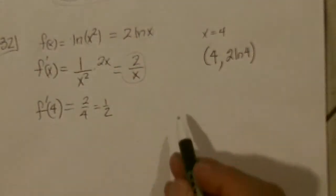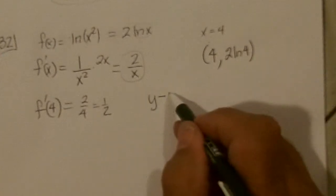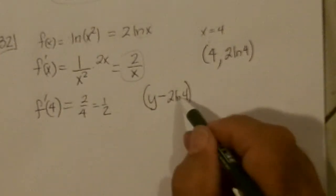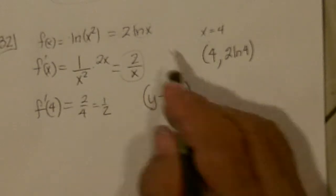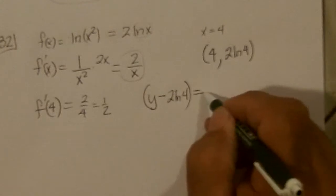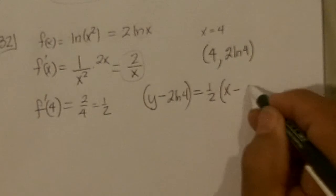Now, the equation in the tangent line would be Y minus 2 ln 4 or 2 ln 16, 4 squared is 16, equals the slope 1 half times X minus the X coordinate.